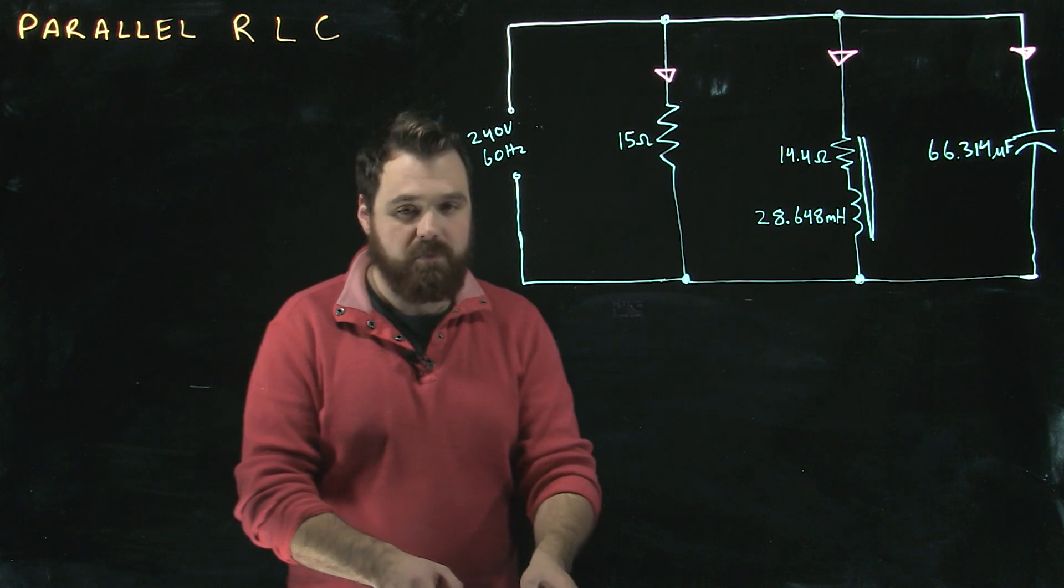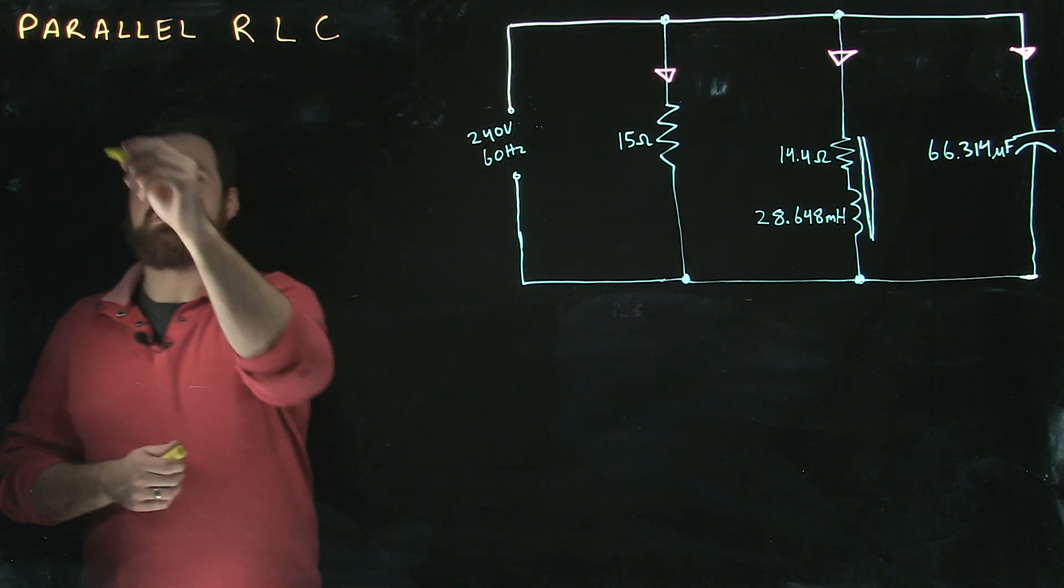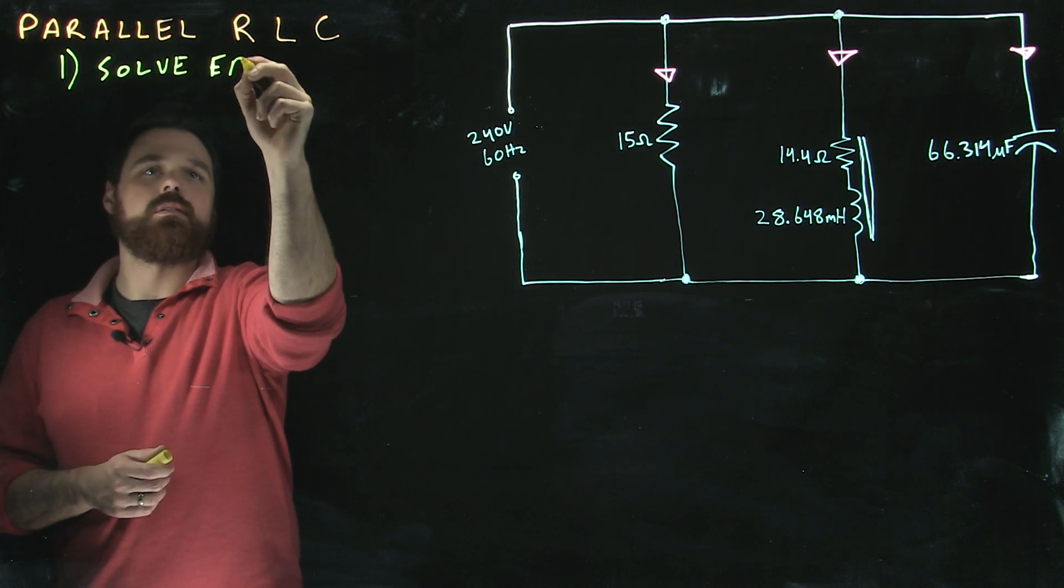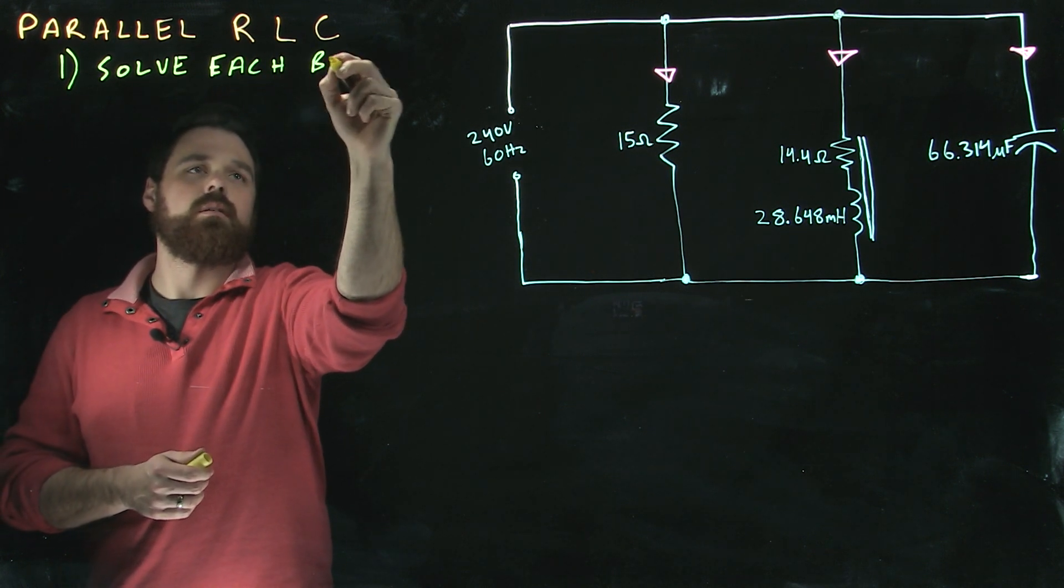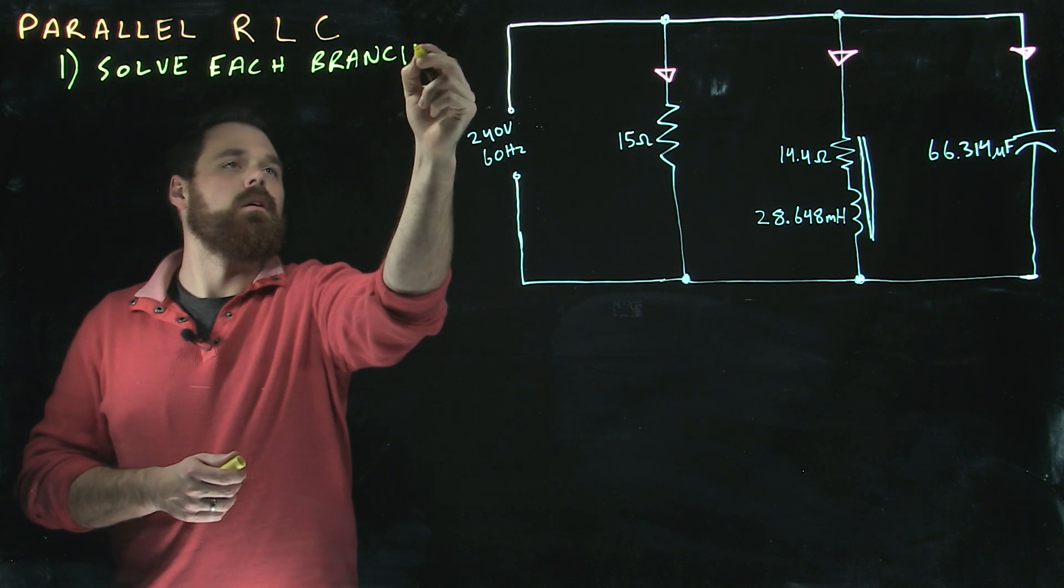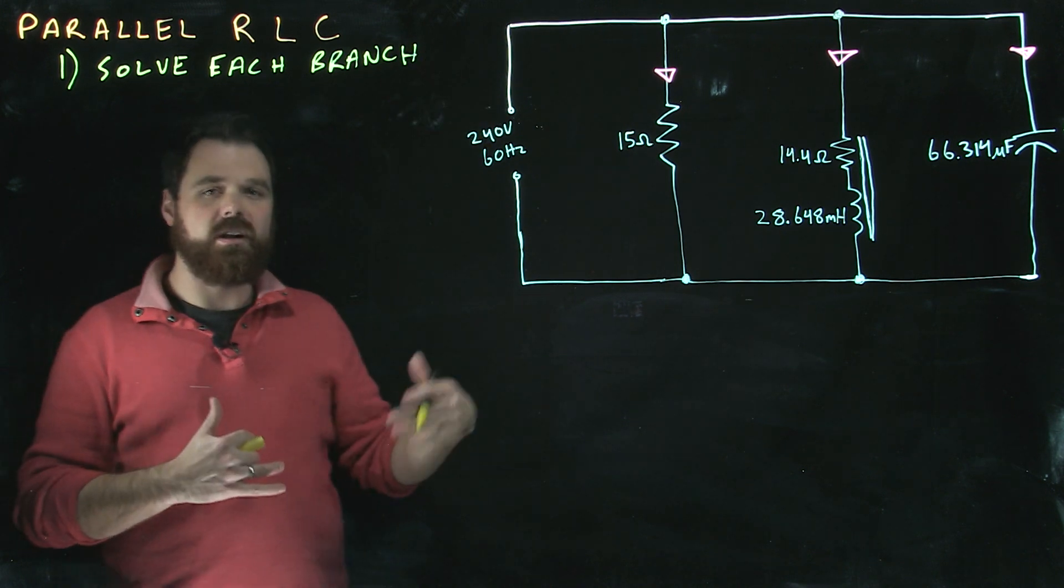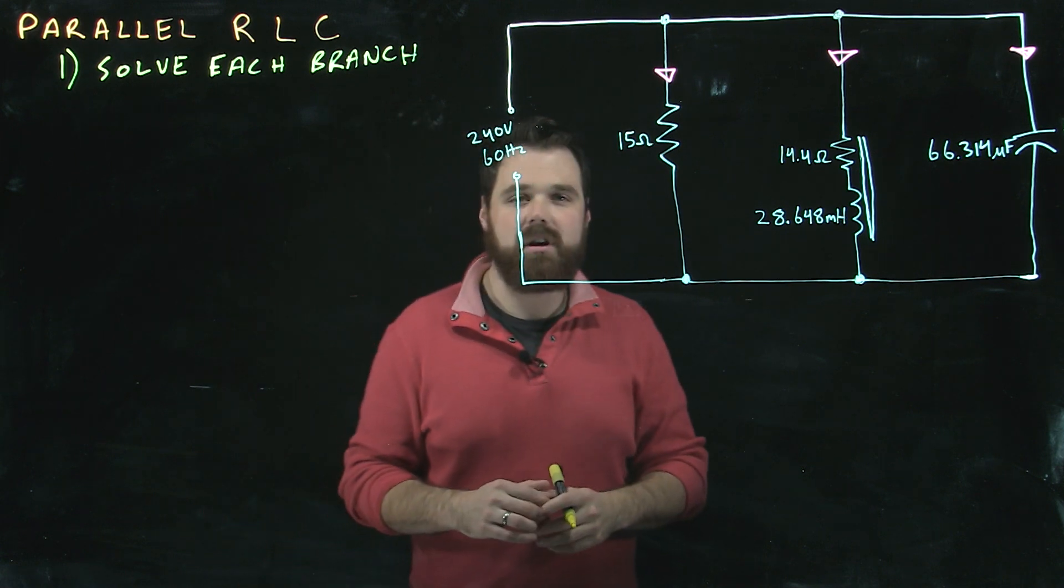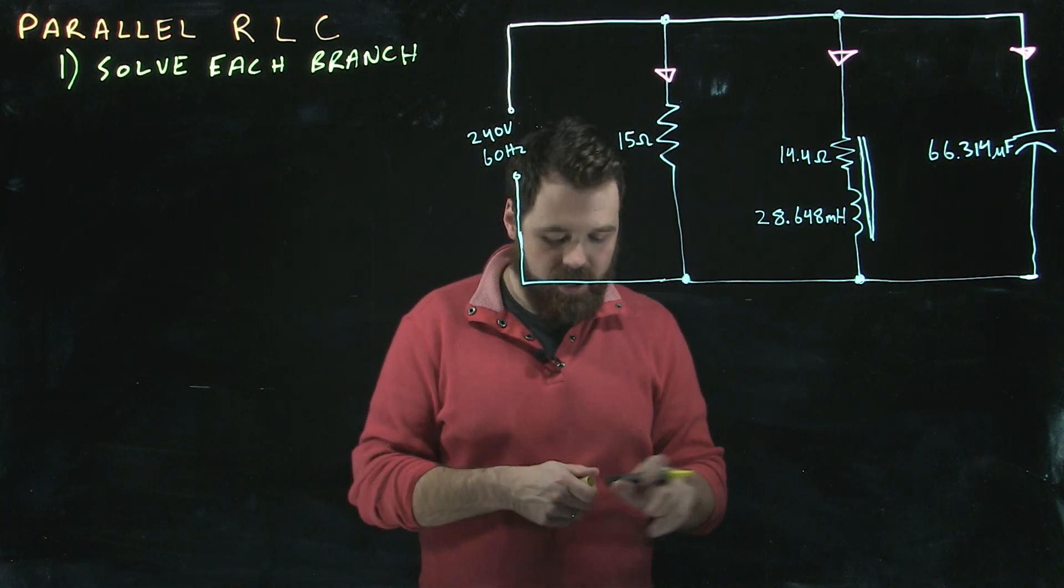So the first step in parallel RLC circuits, step number one, is to solve each branch. Now the key is to just do a little bit at a time and work our way towards the end. Trying to look at the whole question at once is going to be overwhelming.